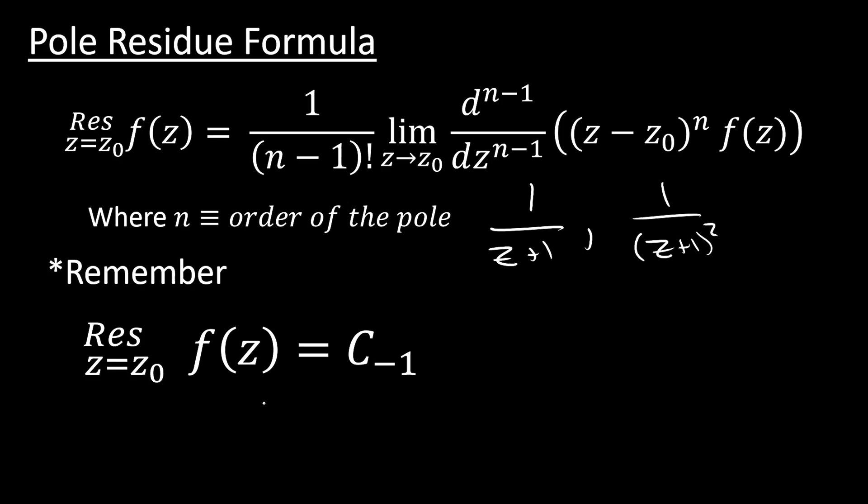But remember, we can still use method one, where we expand our function into its Laurent series, and then just find the c minus one coefficient. But this is really best seen in some examples, so let's do that.